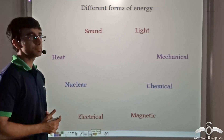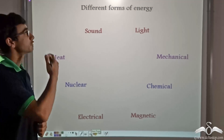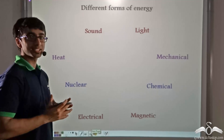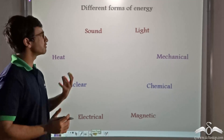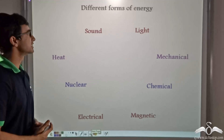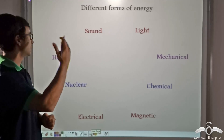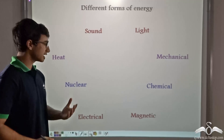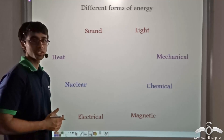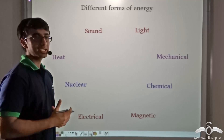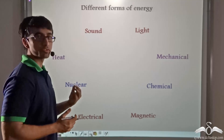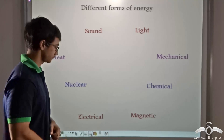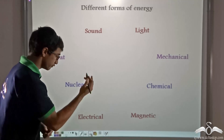In a similar manner, there are different forms of energy. Energy does not exist in only one form. There are various forms of energy like sound, light, heat, mechanical, nuclear, chemical, electrical, and magnetic. So let us find out where these respective forms of energy are commonly seen or felt.